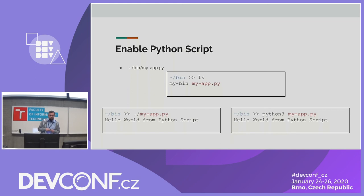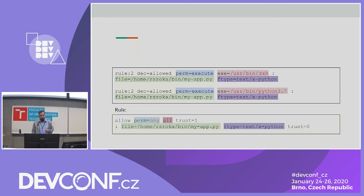But there are two ways to run a Python script. We tried the first approach, but there is also the second — specifying the Python interpreter explicitly. If we grep for the event in the FAPOLICYD log, we can see that running the script with the Python interpreter specified changes the subject. However, if we put 'all' as the subject keyword, it will still work. It's good to know this difference.